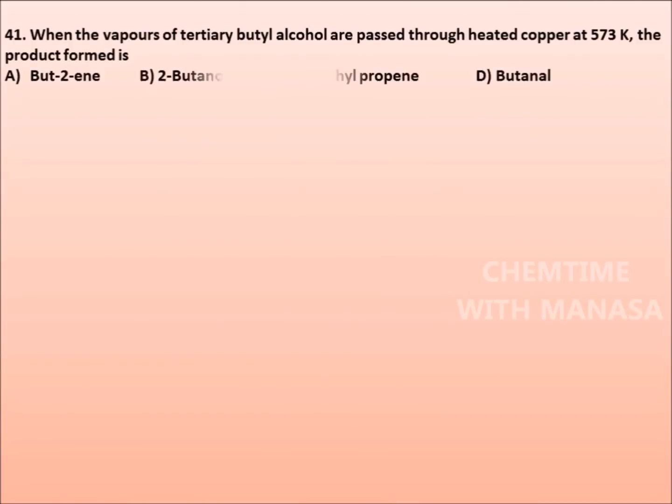In that question paper, question number 41 is: When the vapors of tertiary butyl alcohol are passed through heated copper at 573 Kelvin, the product formed is but-2-ene, 2-butanone, 2-methylpropene, or butanal.